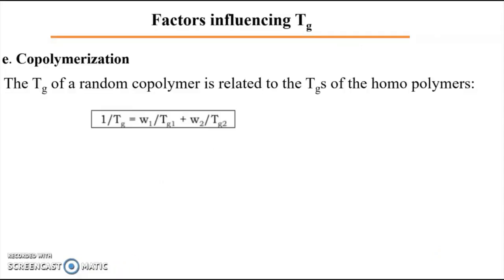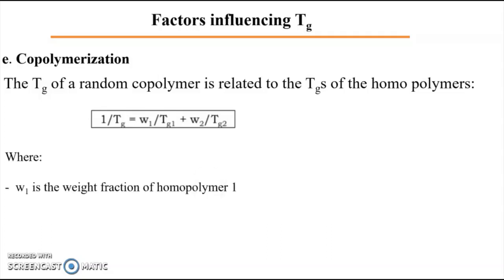According to the Fox equation: 1 over Tg equals w1 over Tg1 plus w2 over Tg2, where Tg1 and Tg2 are the glass transition temperatures of each homopolymer, and w1 and w2 are the weight fractions of each component in the copolymer chain.